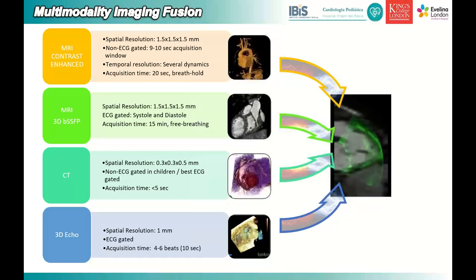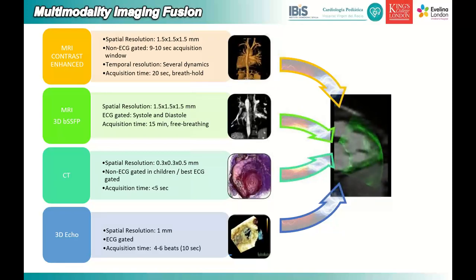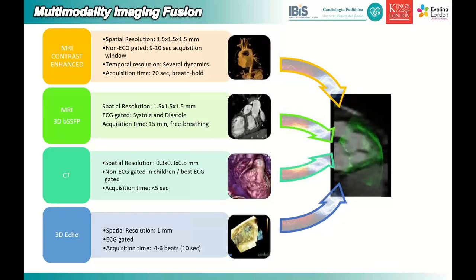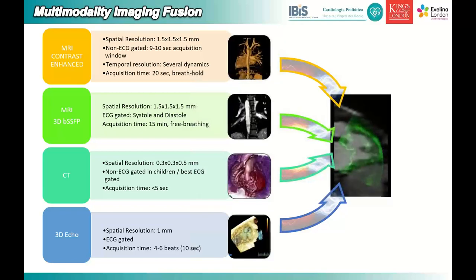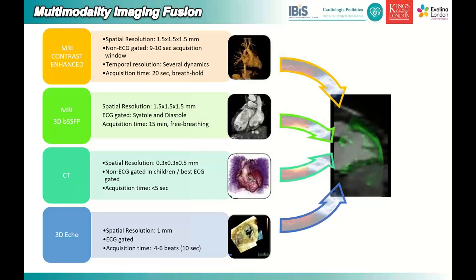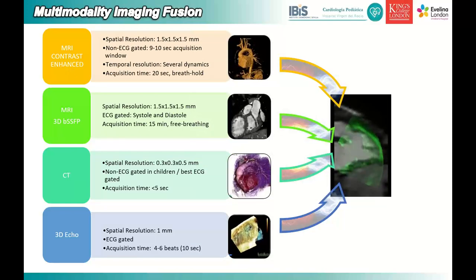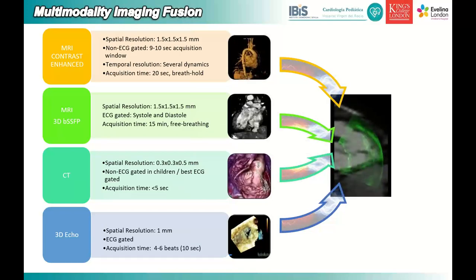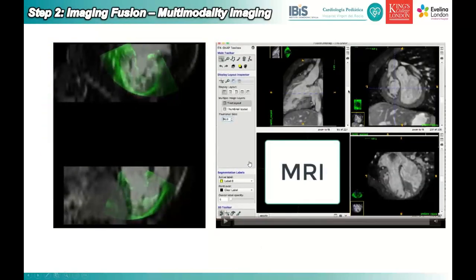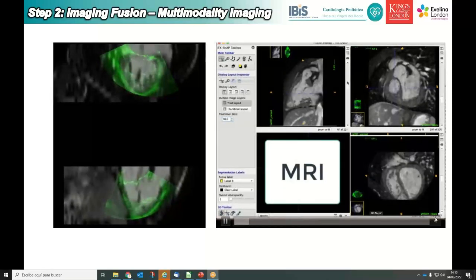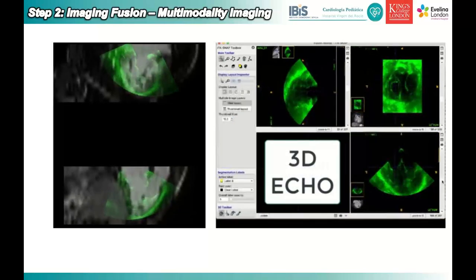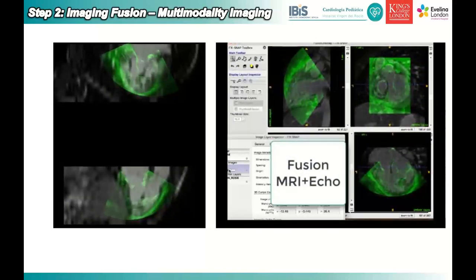After so many talks about multimodality imaging, you really understand it's about combining modalities — not just presenting 3D echo and CT separately, but combining the images and presenting both at the same time. With MRI, you can go for contrast-enhanced or 3D balanced SSFP, or CT or 3D echo. Combining images lets you get the best of both worlds — physiology, anatomy, valves, and outflows.